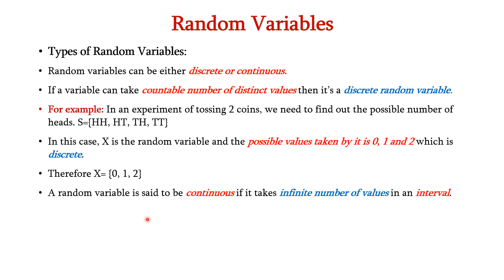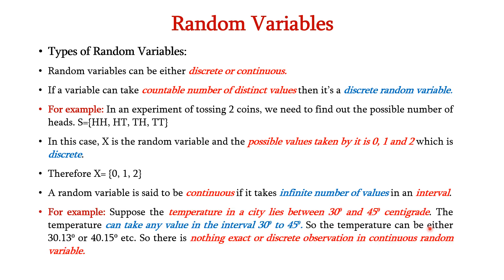A random variable is said to be continuous if it takes infinite number of values in an interval. For example, suppose the temperature in a city lies between 30 degrees and 45 degrees centigrade. The temperature can take any value in that interval, such as 30.13 or 40.15 etc. So there is nothing exact or discrete in a continuous random variable.